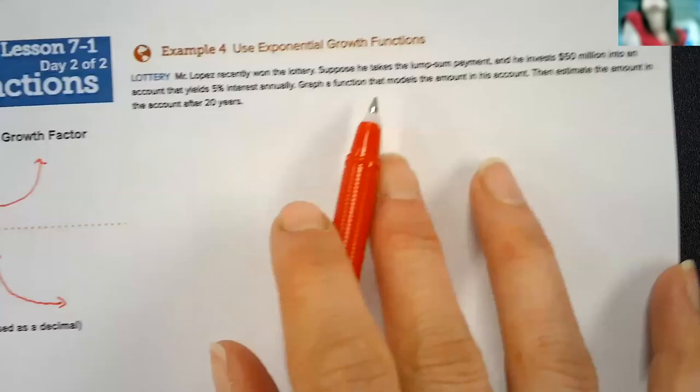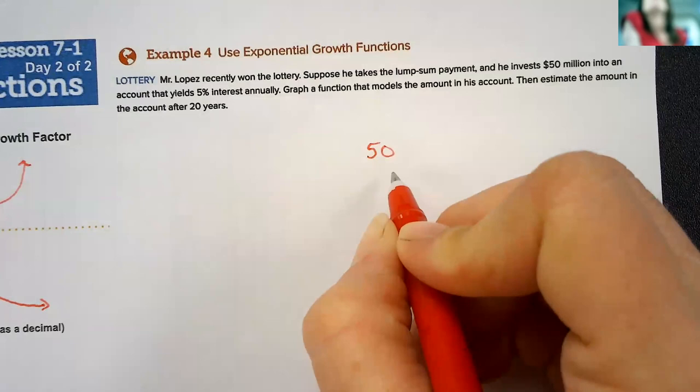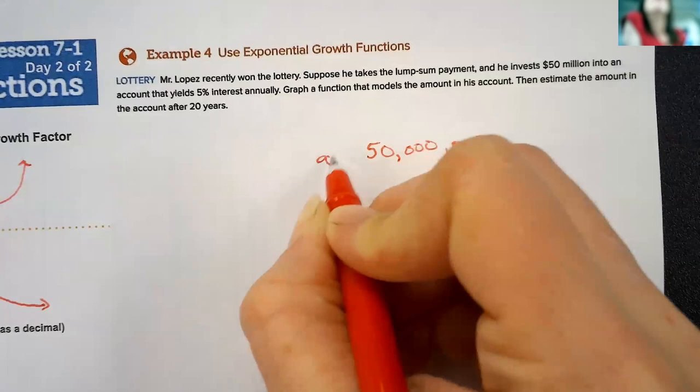Mr. Lopez recently won a lottery. Suppose he takes a lump sum payment, and he invests $50 million. So, that is the A value.